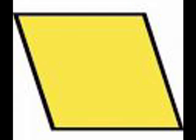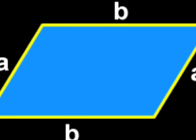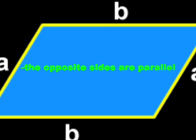The first and most important quadrilateral to know is the parallelogram. A parallelogram is defined as a quadrilateral in which both pairs of opposite sides are parallel. In a parallelogram, the opposite sides are parallel.